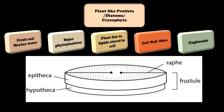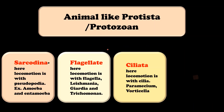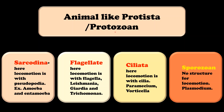The second group is animal-like Protista, also called protozoans. This group of organisms does not have a cell wall and they are believed to be primitive animal forms. This group is further divided into 4 subgroups. The first is Sarcodina, which includes organisms like Amoeba and Entamoeba, and they show locomotion with the help of pseudopodia.